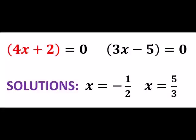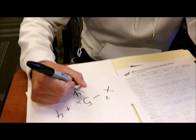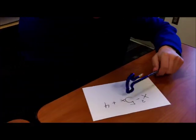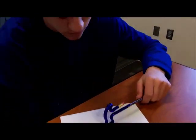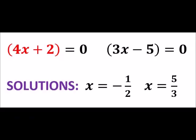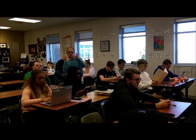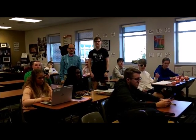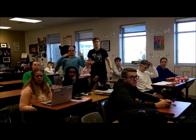Set each factor to zero and we'll solve for x for sure. When one answer is negative one half, you'll see. The other is positive five over three. Using this, we'll be marfing all night. And our answers are out of sight.